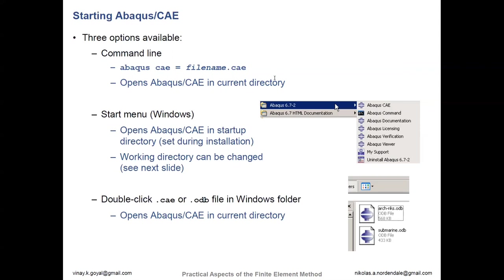How do you start Abaqus? You have three different options. First is using a command line — open the Abaqus folder, open the Abaqus command window, and use the command 'abaqus cae=' followed by the file name of your CAE file. The CAE file is a model database file; it will bring up everything you saved in the CAE. It's important to note that a single CAE file can be used to create multiple input files, and those input files may not all be saved in the CAE file. So make sure you save all the individual files you need.